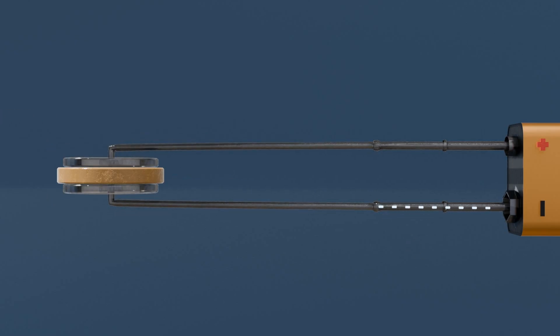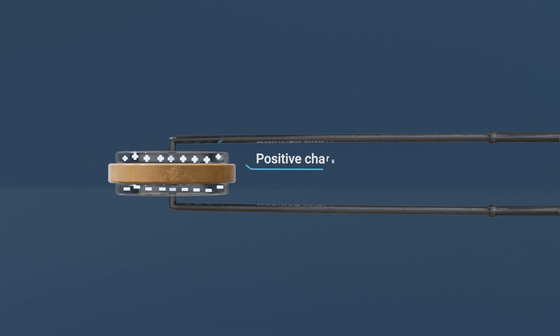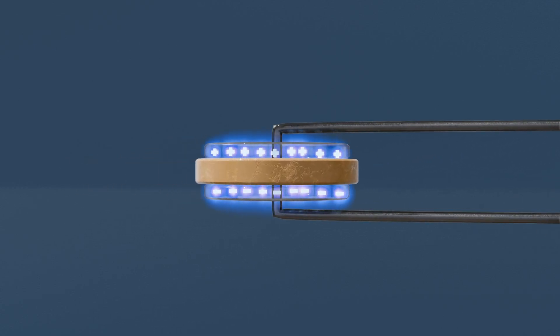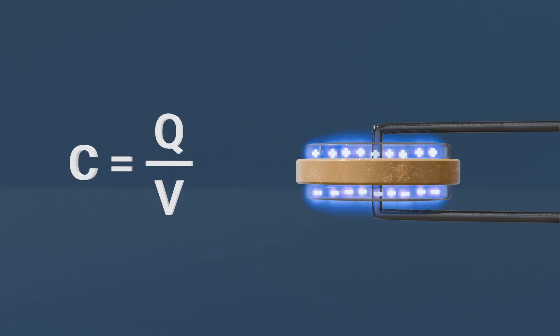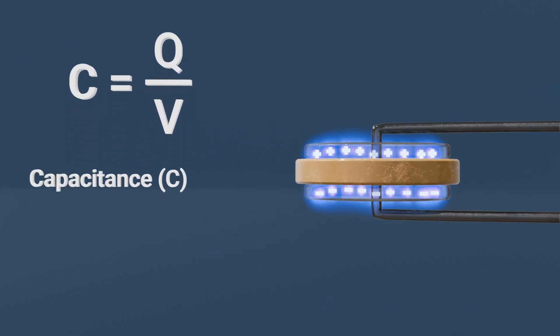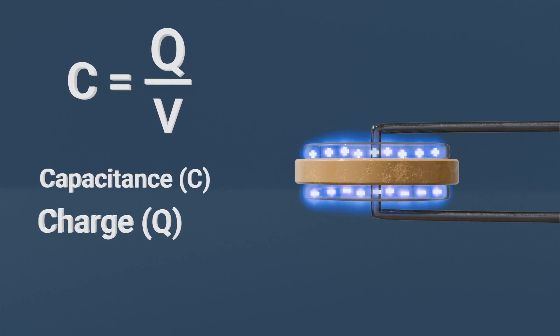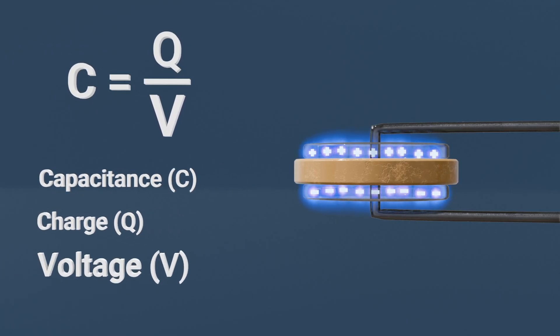When voltage is applied across the plates, positive and negative charges accumulate on the opposing plates, creating an electric field. The key property of a capacitor is its capacitance, which is the ability to store charge per unit voltage. Capacitance can be denoted as C equals Q divided by V, where C is capacitance, Q is charge, and V is voltage.